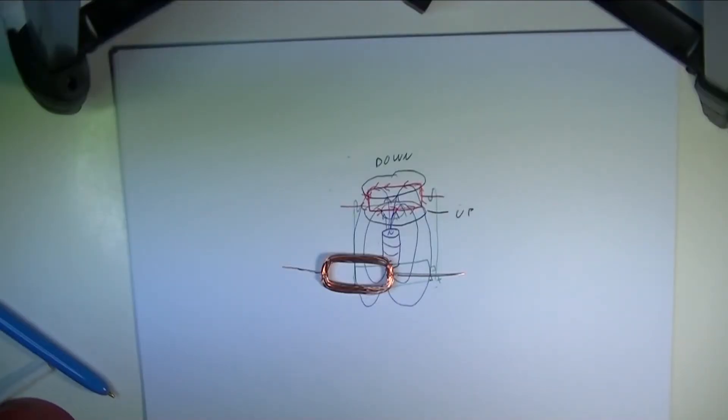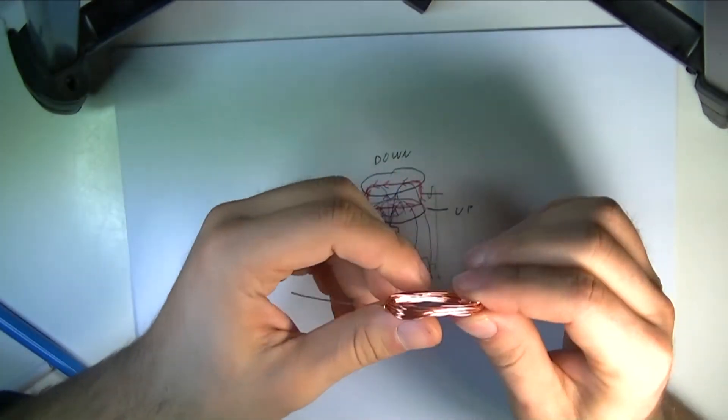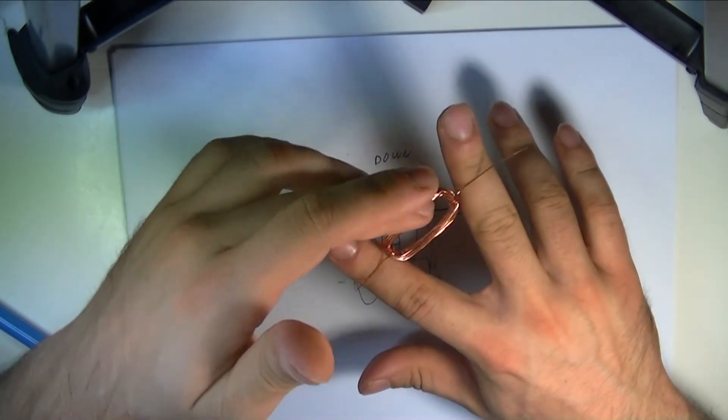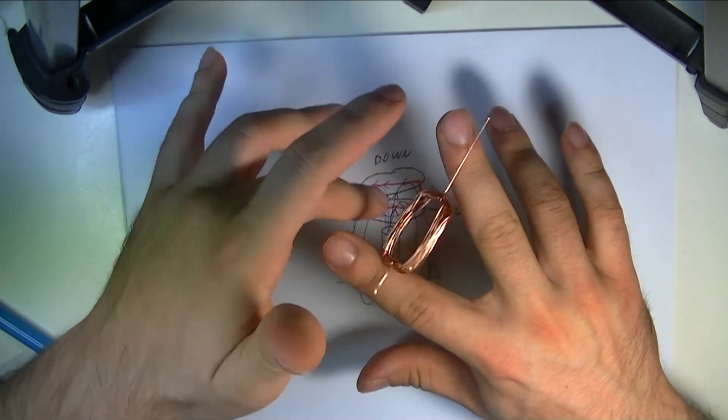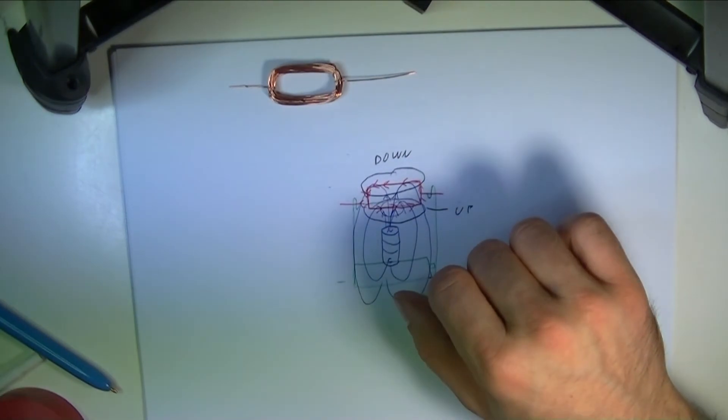Okay so here's our coil and we haven't sanded down the sides yet but if I just put it here I can see that I can just about rotate it which means that it should be close to ready and we'll use it when we build everything else.